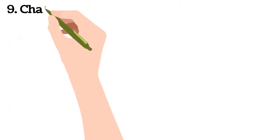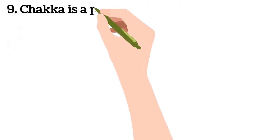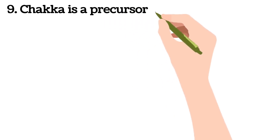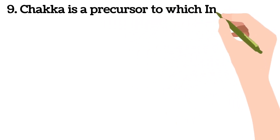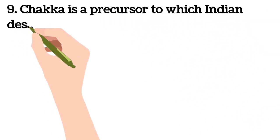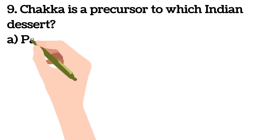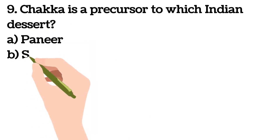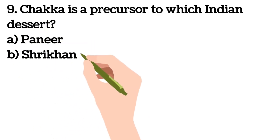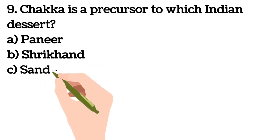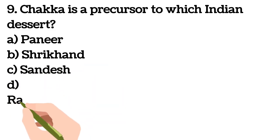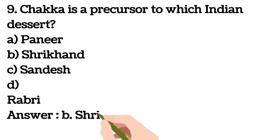Ninth question: chakka is a precursor to which Indian dessert? A) Paneer, B) Shrikhand, C) Sandesh, D) Rabri. Your answer is B, Shrikhand.